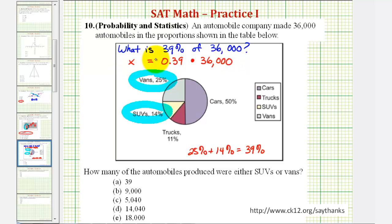So if we want to find 39% of 36,000, we just have to find this product or multiply 0.39 and 36,000.